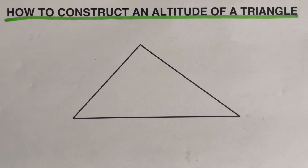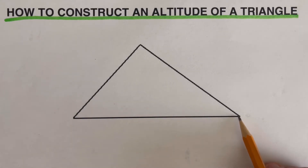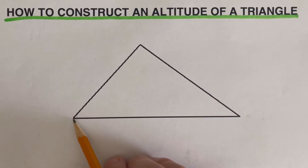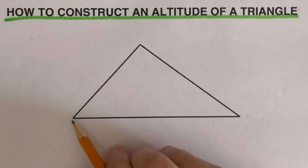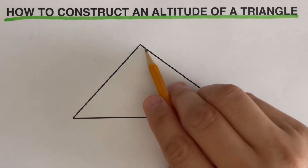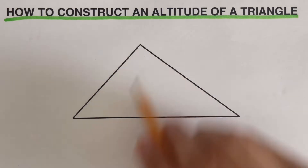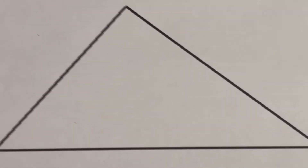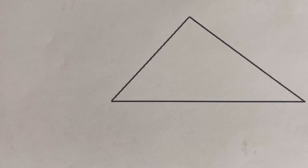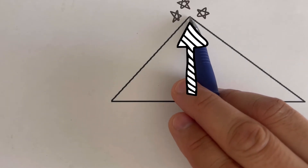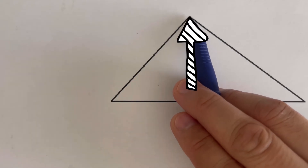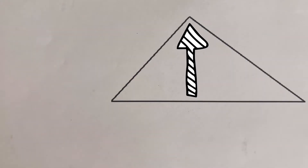Since there are three vertices of a triangle, we can create three altitudes — the maximum number of altitudes for a triangle is three. We can create an altitude from each vertex to its opposite side, each forming a 90-degree angle. For this video, I'm going to show you how to construct an altitude coming from one specific vertex. The steps we use will be the same for all other vertices.